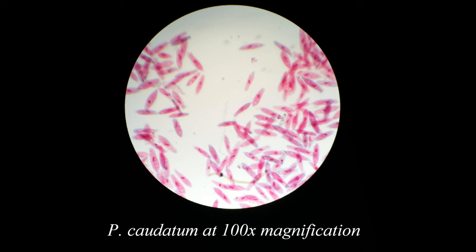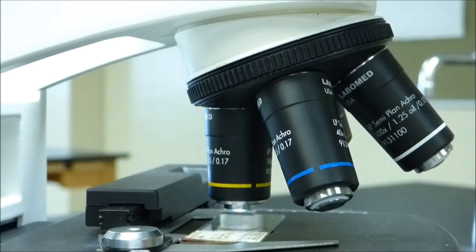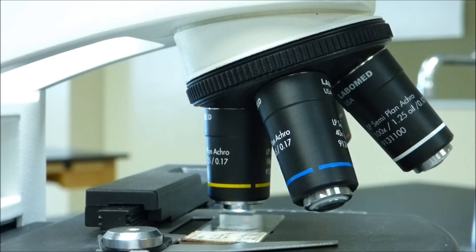You can also use the mechanical stage knobs to center the specimen again if it isn't already. It should be clear to you now that at 100x magnification, both the light intensity and portion of the specimens available within the microscope's field of view are much less than when compared to 40x magnification.